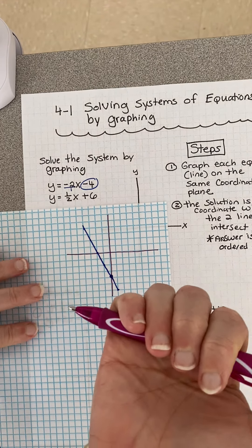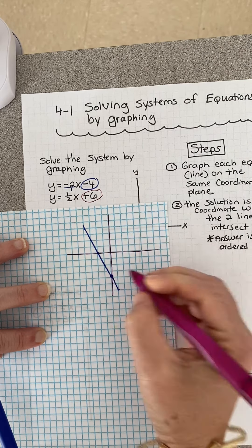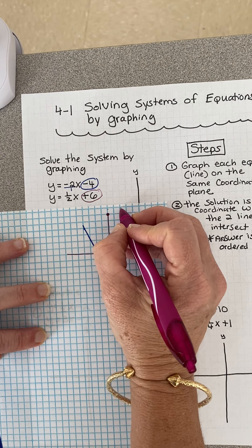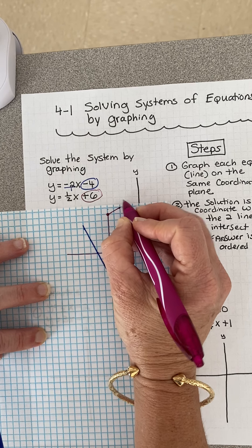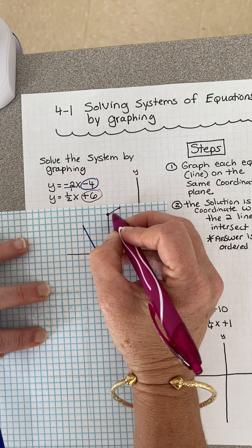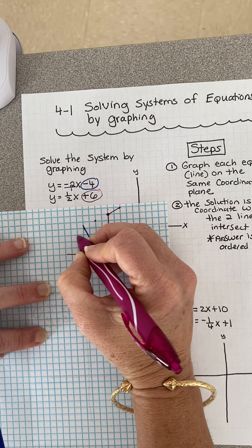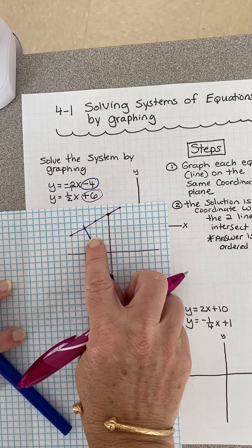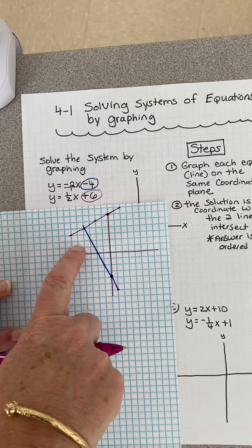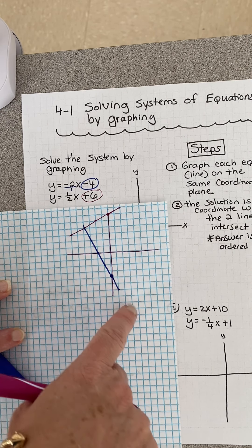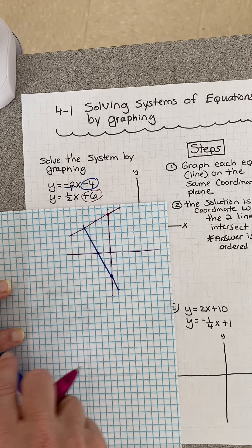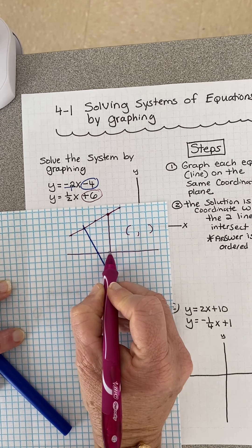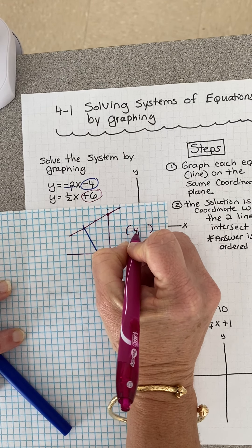For my second line, the y-intercept is 6, and my slope is 1/2. So rise 1, run 2. I notice I'm running out of room on this side - they're not going to intersect on this side, so the other side is where I really want to go. Sometimes people ask me how long the line has to be - I want to go until they intersect, because that's the point I care about. So the solution to this system is negative 4, 4.